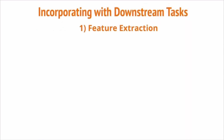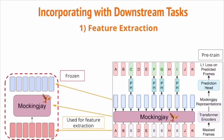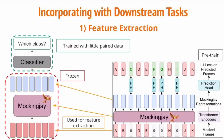There are a total of three ways to incorporate the pre-trained Mockingjay model with downstream tasks. The first way is to extract features from the trained model and use them as speech representations. We pre-train the Mockingjay model as mentioned, then freeze the pre-trained model and use it for feature extraction. The downstream model — for example, a phoneme classifier or speaker classifier — is trained with little paired data. The supervised loss is applied on the classifier only, and no gradient will flow through the frozen Mockingjay model.